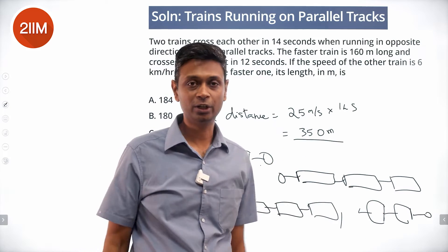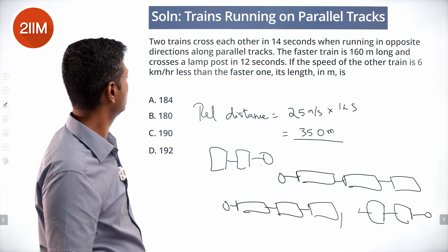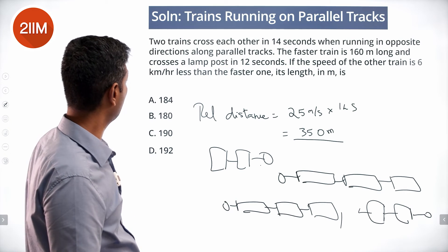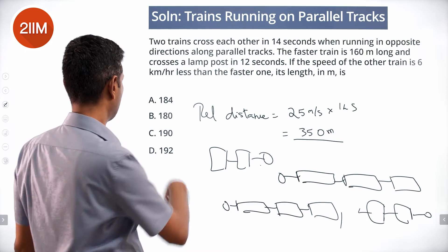This is 350 meters totally. One train is 160 meters long, the other one is 190 meters.